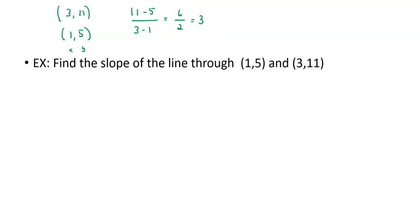What if I did it the other way? What if I decided I wanted to pick the bottom point first? So if I pick the bottom point first, I still have to put the Ys on top. So I'll get 5 minus 11, that's a change in Y. Change in X, 1 minus 3. So 5 minus 11 is negative 6. 1 minus 3 is negative 2. Divide them. Negative divided by a negative is a positive. I still get 3.